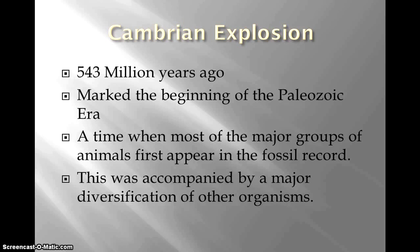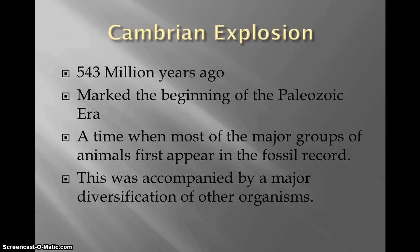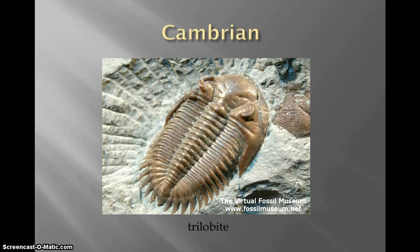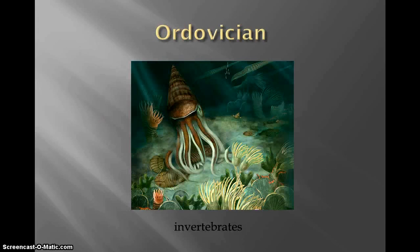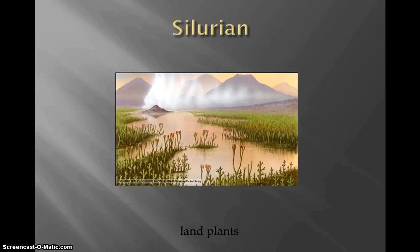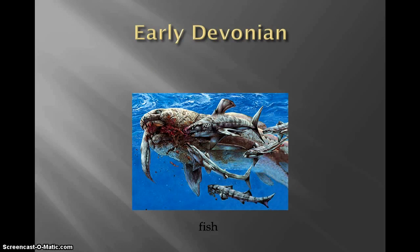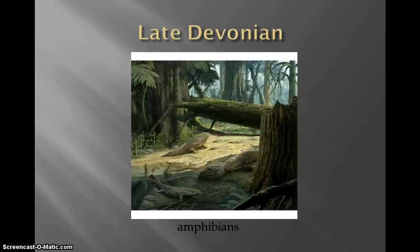The Cambrian explosion was accompanied by a major diversification of animals. Here's one of the animals we found from fossils, and here's an invertebrate that was there. In the Silurian age, land plants appeared. In the early Devonian, there were fish that roamed — some scary and weird-looking sharks. Remember, this is all reconstructed from fossils. The late Devonian saw the emergence of amphibians.